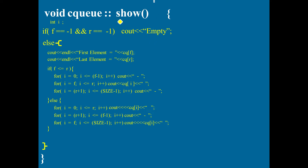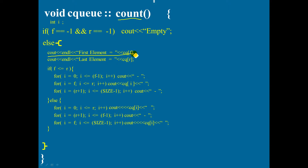In order to write the code for count, you need to make a few changes in the show function. The changes to be made are: the name of the function becomes count. Second change, you don't need to display the first and the last element separately, because here you are counting the elements.